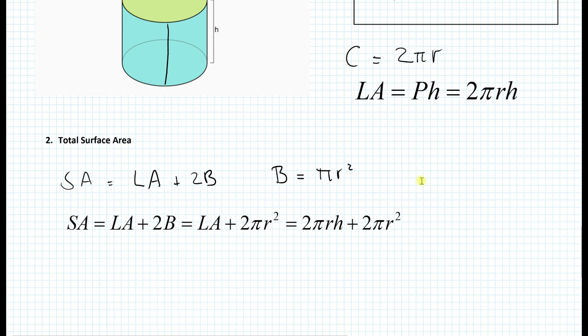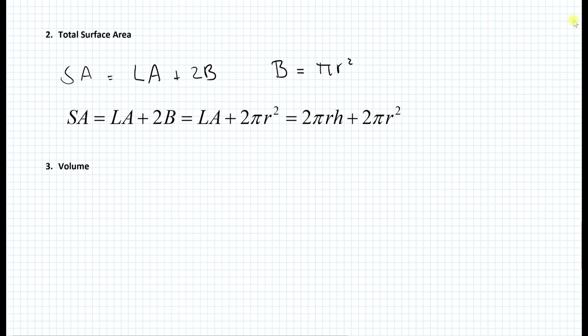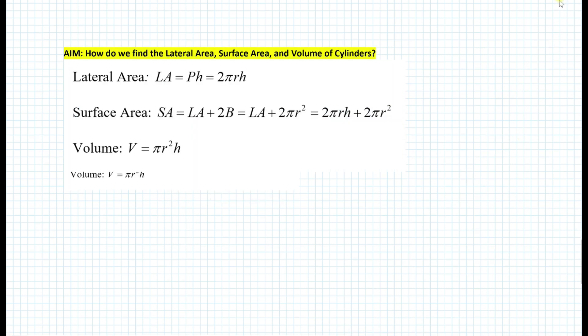The last formula is the volume. Now, the volume is simply the area of the base times the height, which means that the volume is equal to πR²H. Here is the summary of today's lesson. How do we find the lateral area, surface area, and volume of the cylinder? Well, the lateral area is just 2πRH. The surface area is 2πRH + 2πR², and the volume is equal to πR²H. Now that we have defined the lateral area, surface area, and volume of the cylinder, let's go back to the original do now, the regents problem, and let's see how we can solve it now.